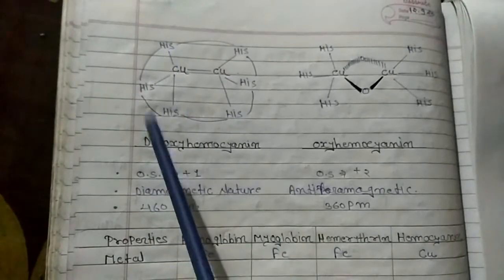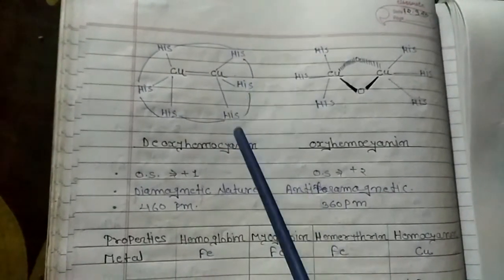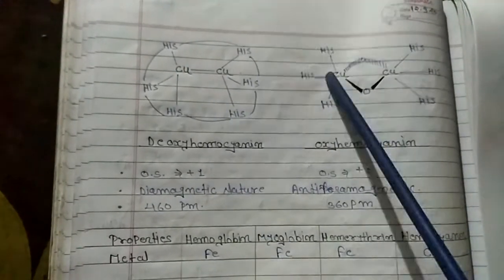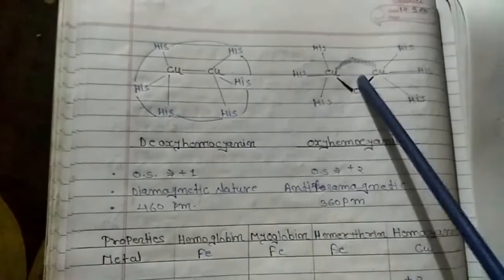The structure has three histidine residues coordinating one copper, and another copper with three histidine residues. The oxy form binds oxygen molecules, while the deoxy form does not.